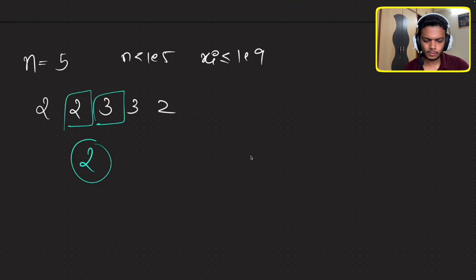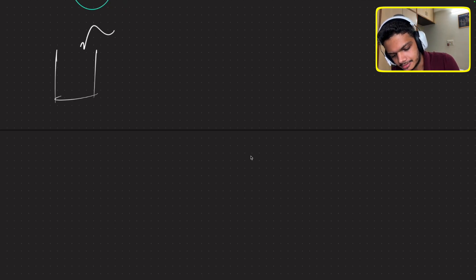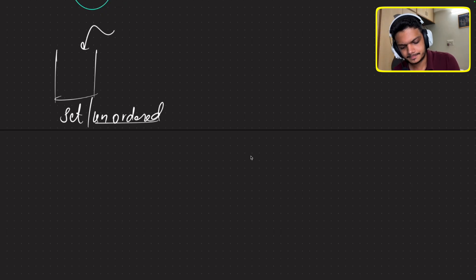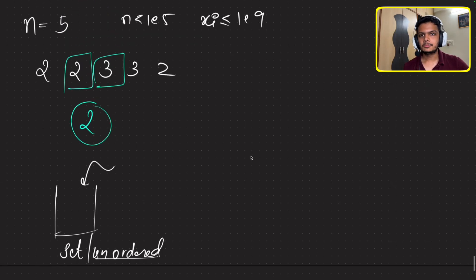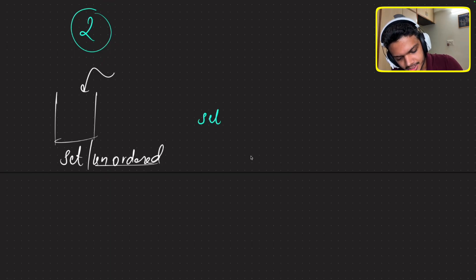How do you approach this? If you want to find unique elements, what data structure comes to mind? Straight away it would be a hash set, or simply a set in C++, or an unordered set. You want elements to be unique, so you just throw all elements into the set. Now which one do you choose? You have two options: the normal set or the unordered set.